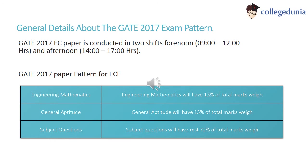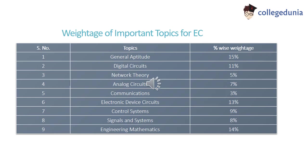Let's have a look at the GATE 2017 exam pattern. Engineering Mathematics will have 13% of the total weightage. General Aptitude will have 15% of the total weightage and subject questions will have the remaining 72% of the total weightage.